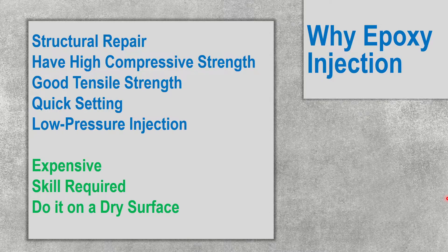Epoxy is used for structural repair. It has high compressive strength and good tensile strength. It sets quickly and can be injected at low pressure due to its low viscosity. So we use a low-viscosity, high-strength injection for structural repairs — that is called epoxy injection.